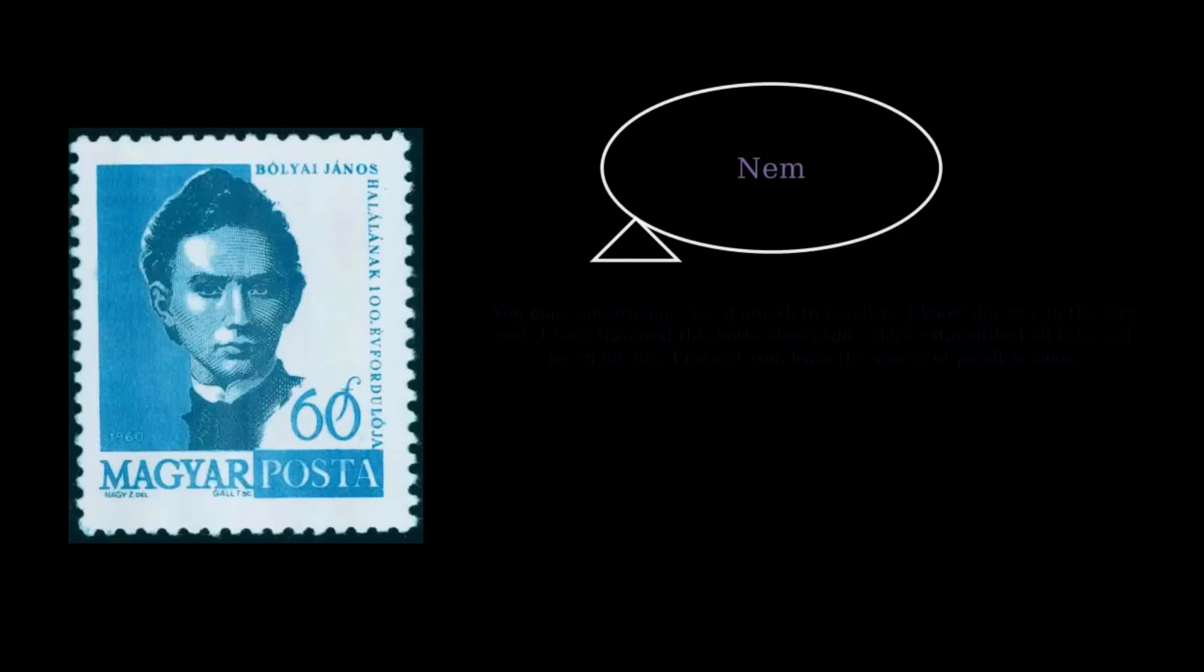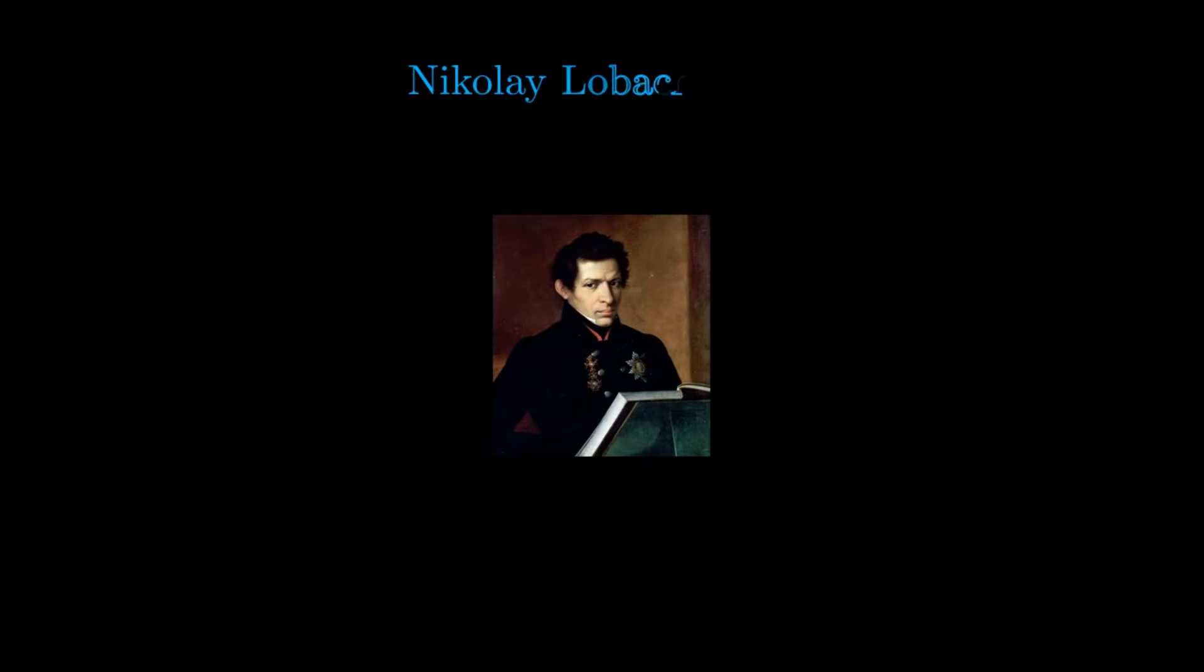Bolyai, however, did not surrender. And in 1823 he came to the conclusion that the fifth postulate is independent of the others. His works were published in 1832. Independent from Bolyai, the Russian mathematician Nikolai Ivanovich Lobachevsky came to similar conclusions. They independently pioneered the development of non-Euclidean geometry, and this is the reason why we often call hyperbolic geometry Lobachevsky-Bolyai geometry.